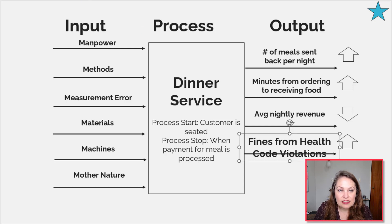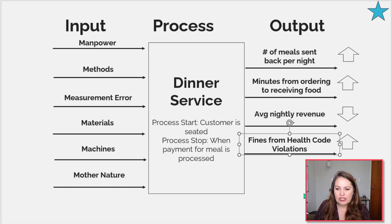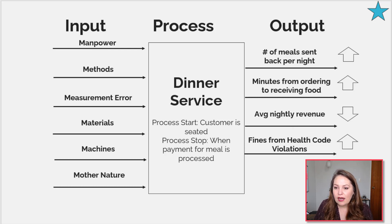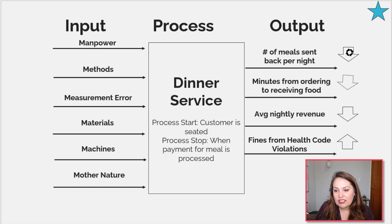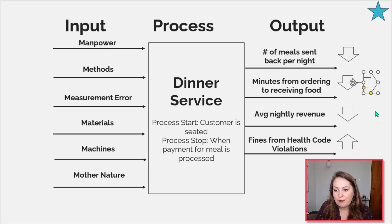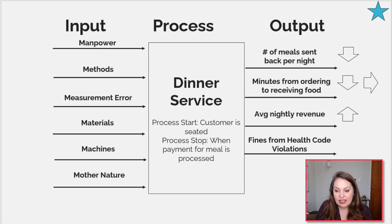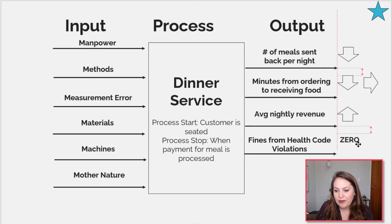Now that we have a few going, you and your team can continue to brainstorm these. Around five to ten outputs is the sweet spot — once you get over seven, it starts to get a bit too many. For number of meals sent back per night, we'd want to see that go down. Minutes from ordering to receiving food — we want that to go down or stay the same. Average nightly revenue — we want that to go up. For fines from health code violations, with safety and security, you want to keep that at zero.